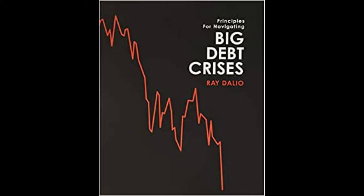Capital outflows tend to happen when an environment is inhospitable — for example, because debt, economic, and/or political problems exist — and they typically weaken the currency a lot. Those who fund their activities in the country with the weaker currency by borrowing the stronger currency see their debt costs soar, which drives the weaker currency down even more. Countries with the worst debt problems, a lot of debt denominated in a foreign currency, and a high dependence on foreign capital typically have significant currency weaknesses. The currency weakness is what causes inflation when there is a depression.